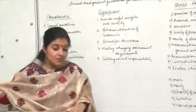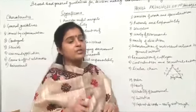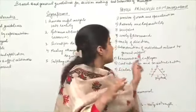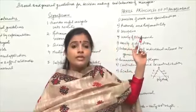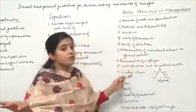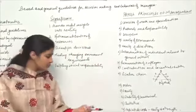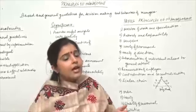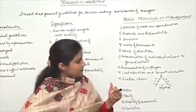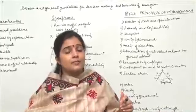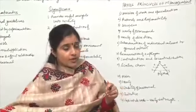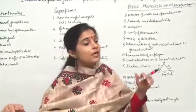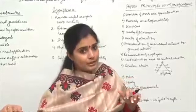Coming to management principles, there are basically two approaches. One is Henry Fayol, who has developed 14 principles of management which are applicable for general administration. And there is another person, Taylor, who worked on scientific management. Taylor's principles are basically meant for the operational or supervisory level of management.